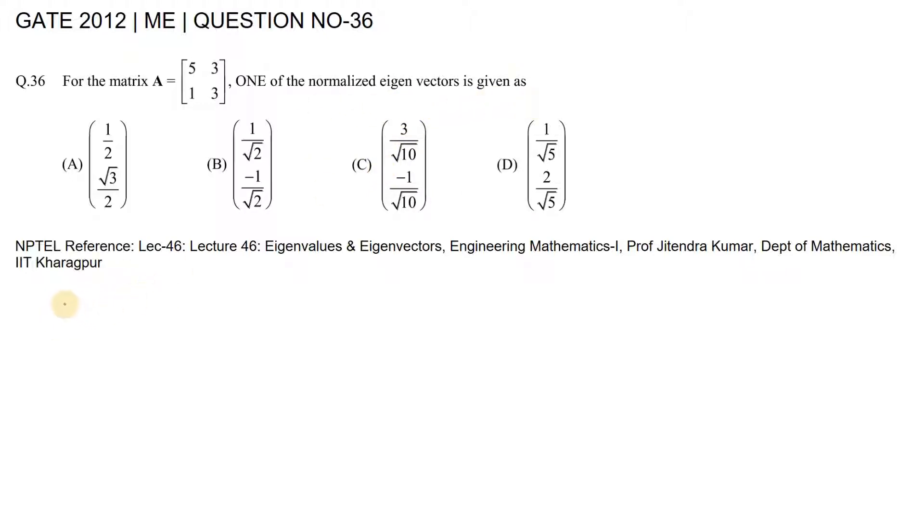First, we need to find the eigenvalues. We can use the characteristic equation. If this is matrix A, so A minus the eigenvalues, let's say lambda, into the identity matrix.